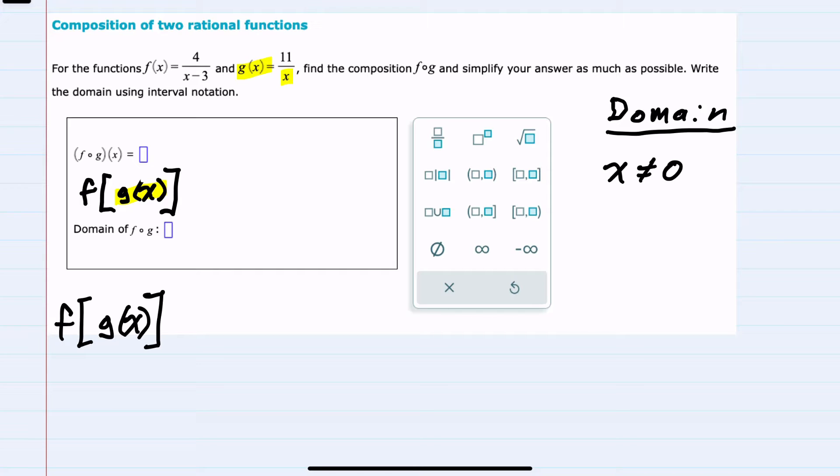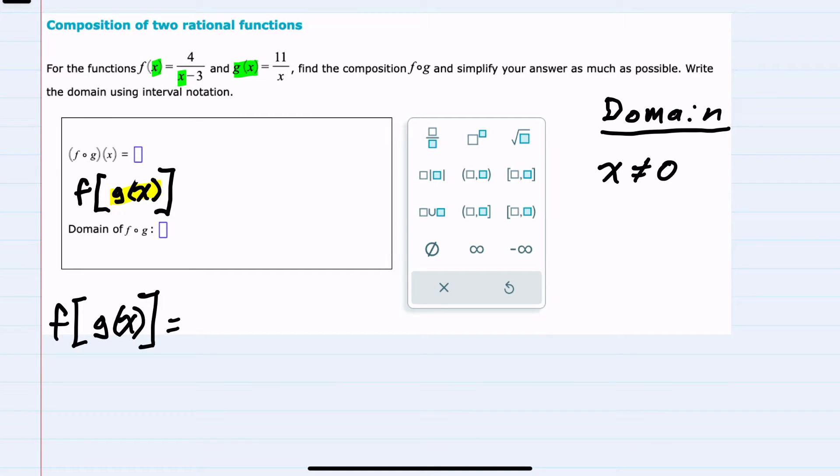But then as we write f of g, we are replacing the x in f with the g function. So that would leave us with the 4 in the numerator, replacing the x with 11 over x, and then minus the 3. This is our composite function.